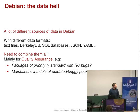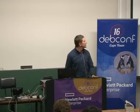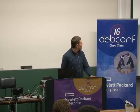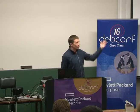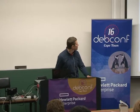And we often have the need to combine them all, mainly to do QA, such as asking what are the packages of priority higher than standard with RC bugs, who are the maintainers who have lots of outdated or buggy packages. Doing that kind of queries before UDD was quite difficult, because you had to parse data coming from different services and combine them using an ad hoc script.